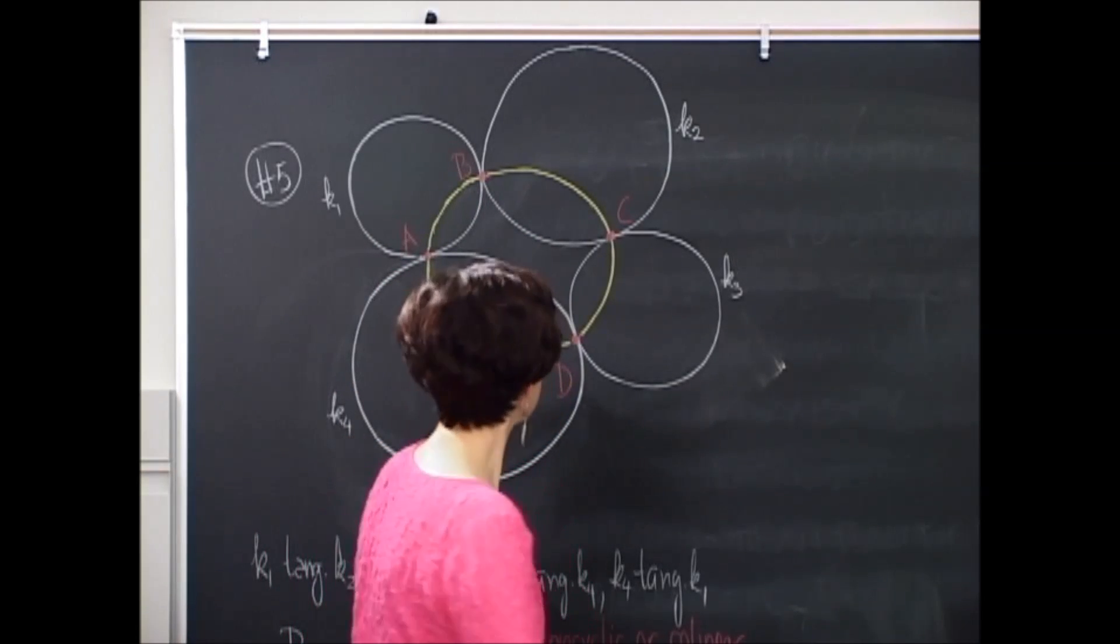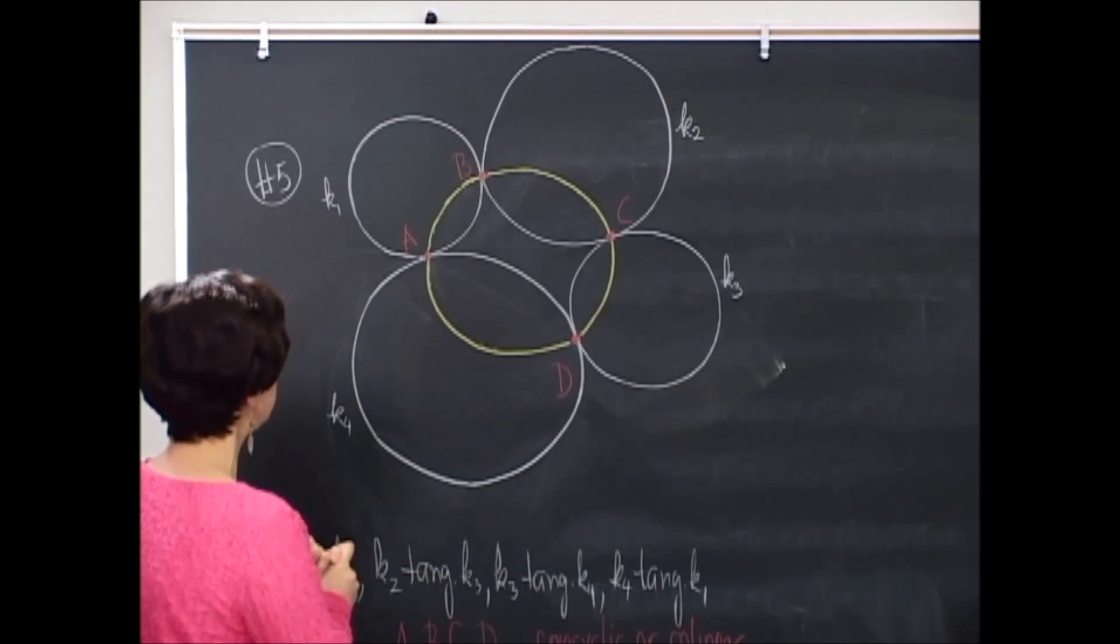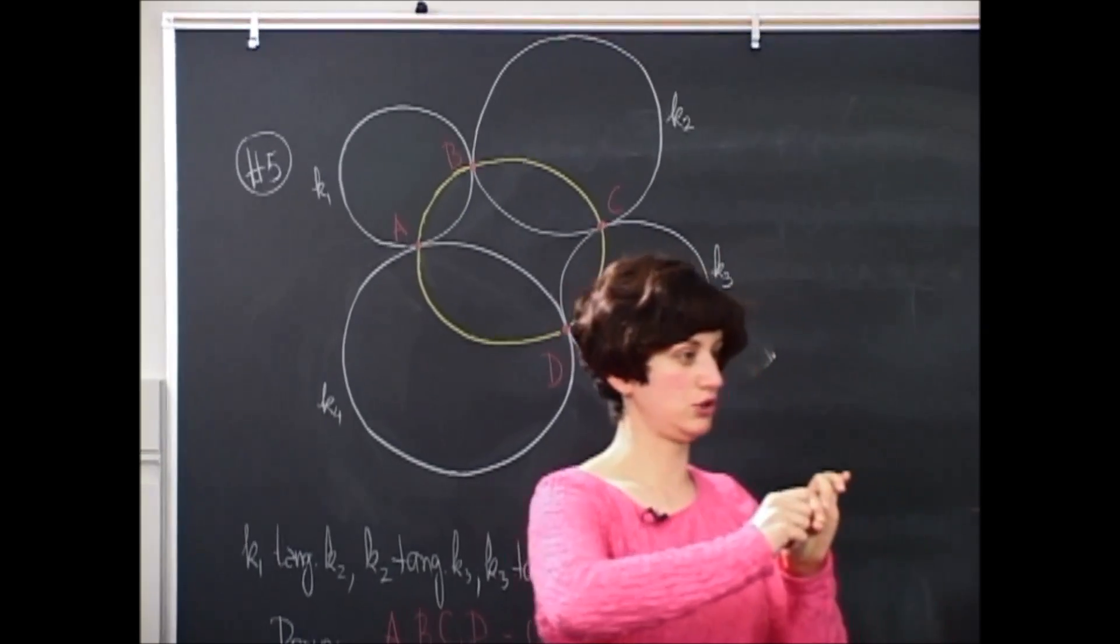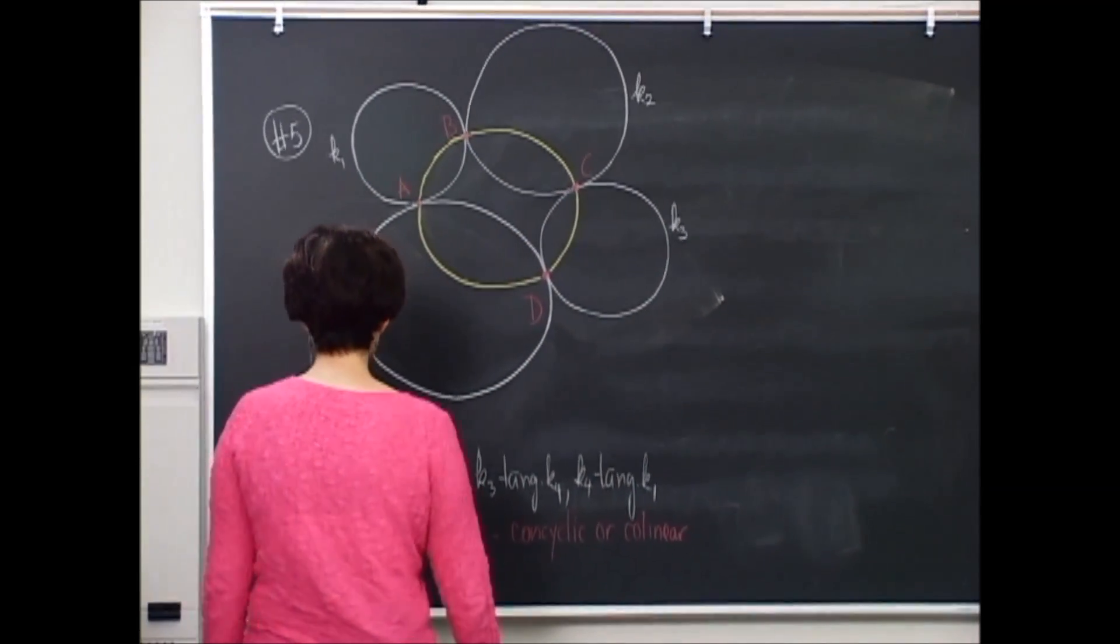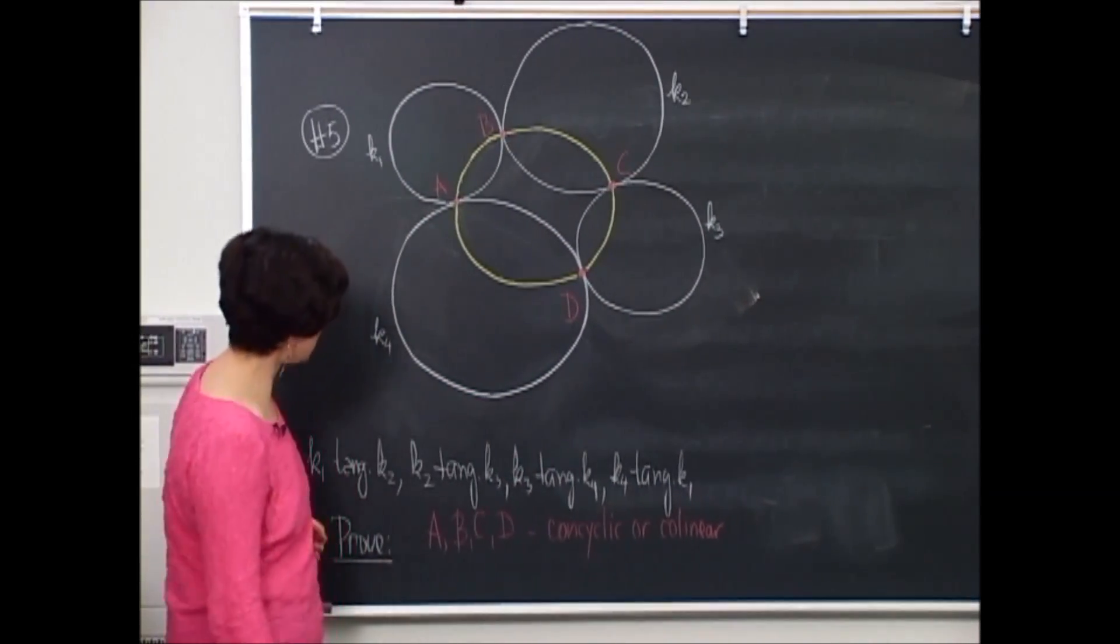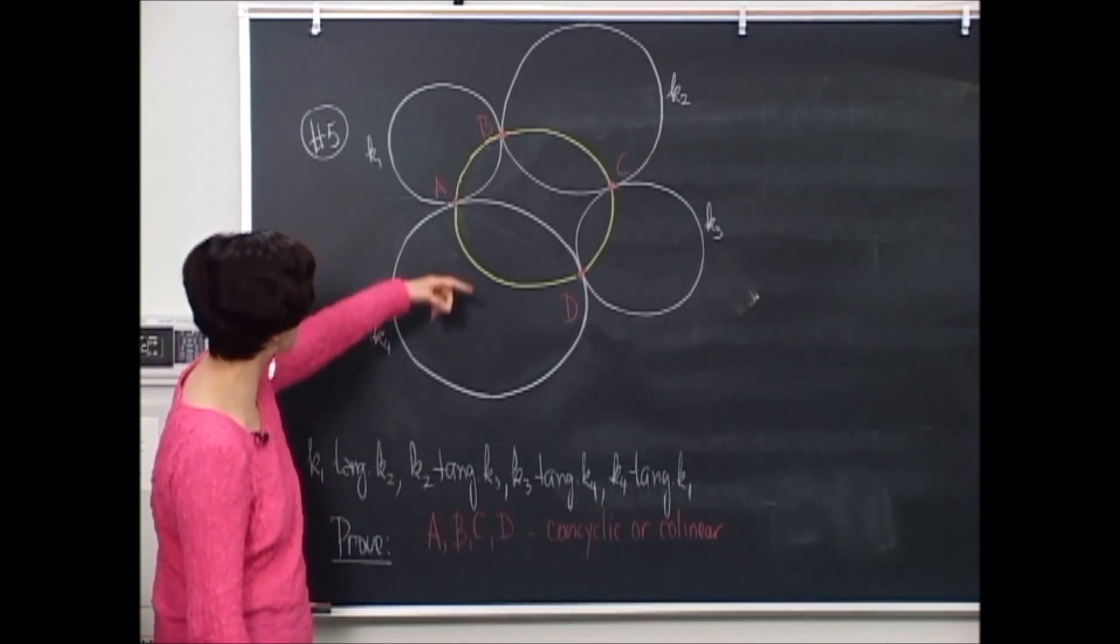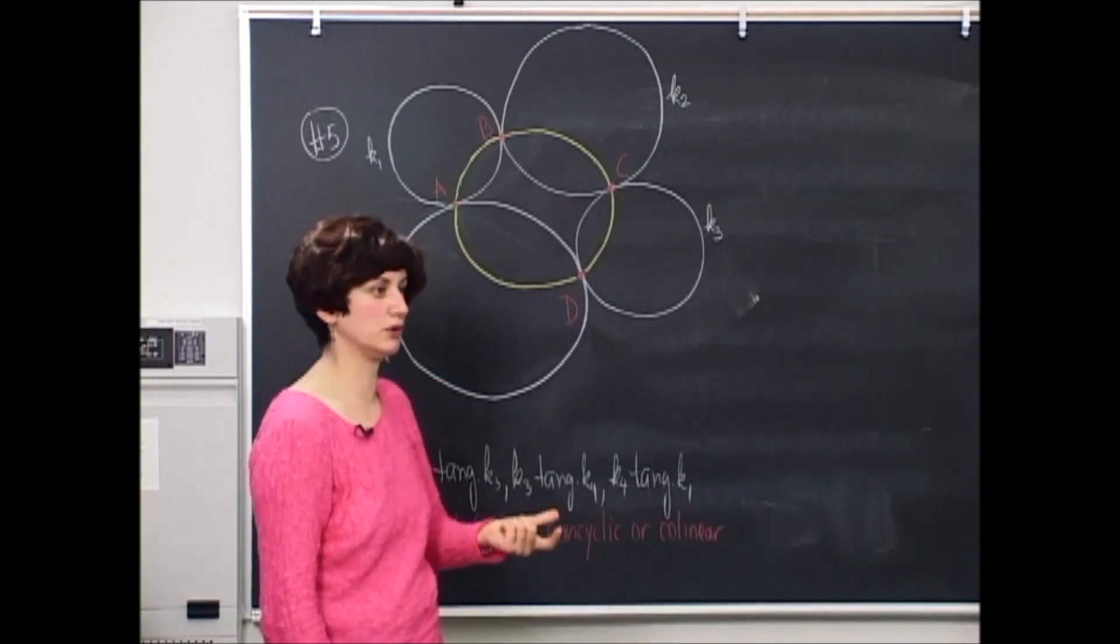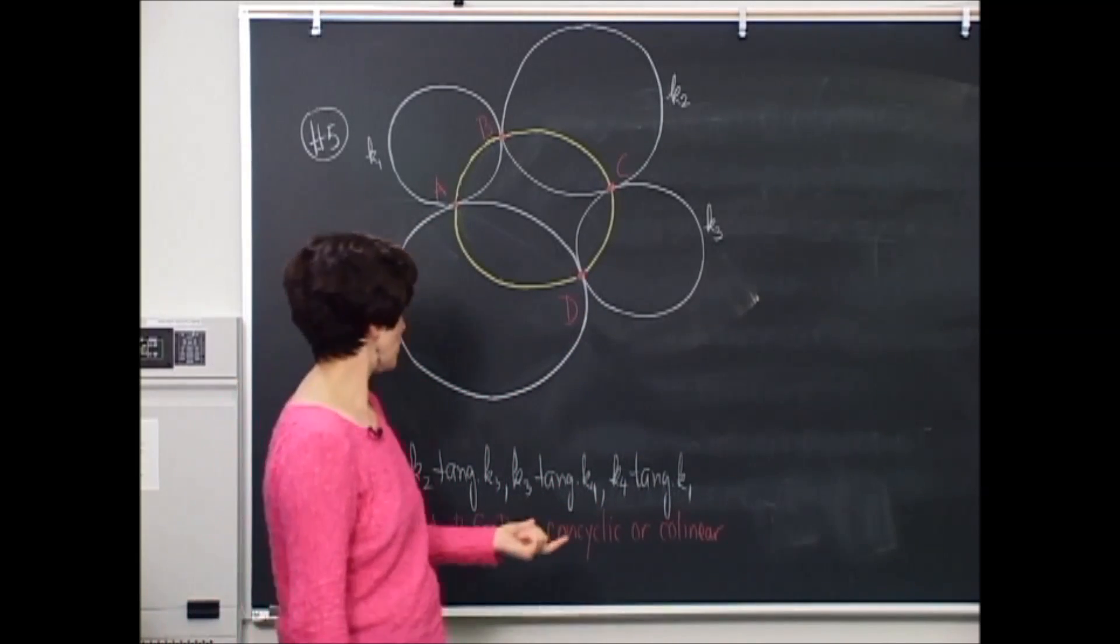So this is what we are given. Everyone knows when two circles are tangent - when they share only one point in common. And so what problem five is asking is to prove that these red points A, B, C, and D are, and here come the technical words from last time, concyclic or collinear.